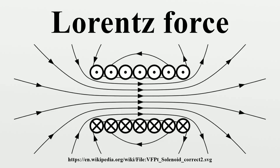A positively charged particle will be accelerated in the same linear orientation as the E field, but will curve perpendicularly to both the instantaneous velocity vector V and the B field according to the right-hand rule. The term QE is called the electric force, while the term QV × B is called the magnetic force. According to some definitions, the term Lorentz force refers specifically to the formula for the magnetic force, with the total electromagnetic force given some other name. This article will not follow this nomenclature.